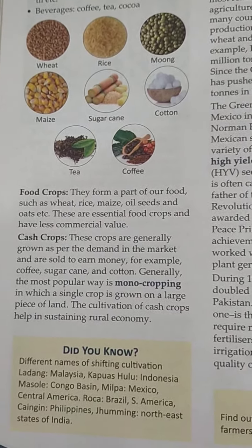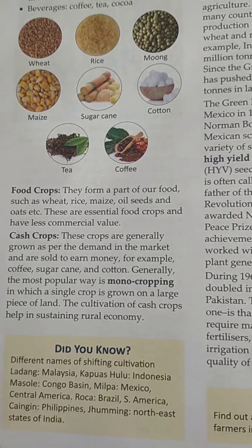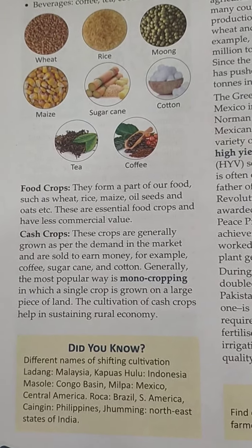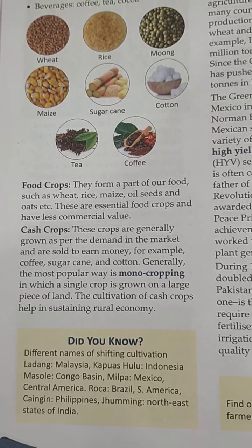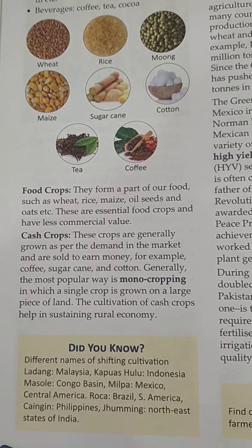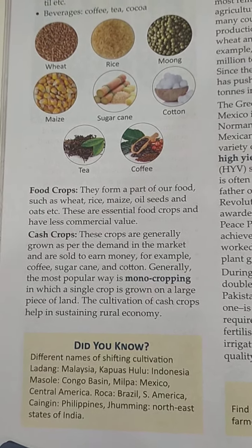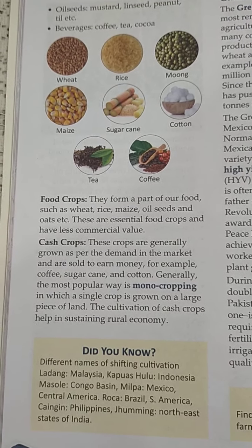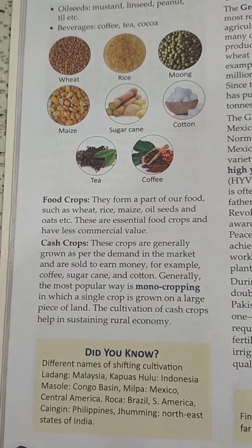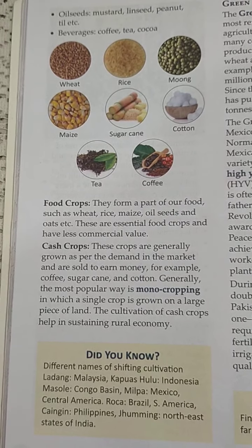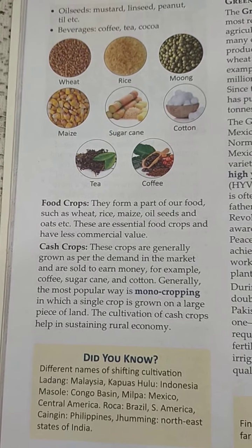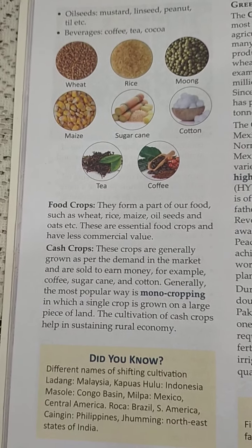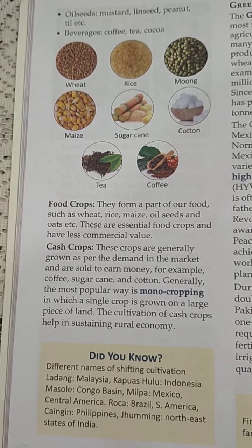Now the difference between food crops and cash crops. Food crops form a part of our food, such as wheat, rice, maize, oilseeds, and oats. These are essential food crops and have less commercial value. Food crops are used for consumption; they are not meant for resale and do not have significant commercial value.